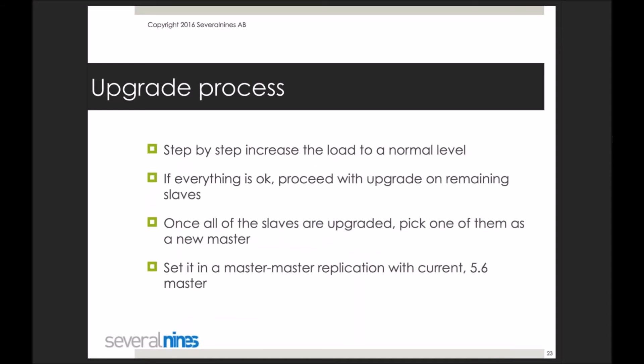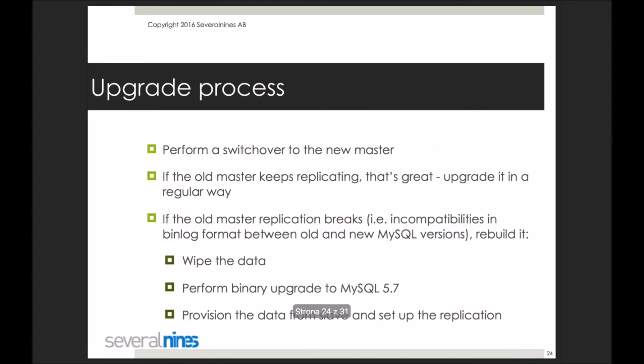If everything is okay, the host is warm, and it's accepting and handling traffic, then you can proceed with the upgrade on the remaining slaves in your topology. Once all slaves are upgraded, you have to pick one of them to become a master. You may want to set up a master-master replication with the current 5.6 master — this is not required but might be useful. Then perform a switchover to the new master and check whether the old master, the remaining 5.6 node, keeps up replicating. If it does, just stop it and perform the regular upgrade process like you did with the slaves.